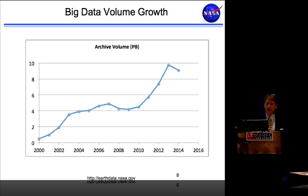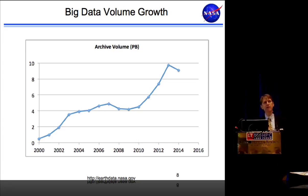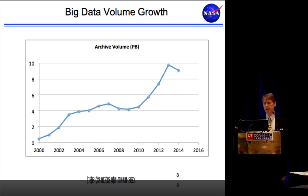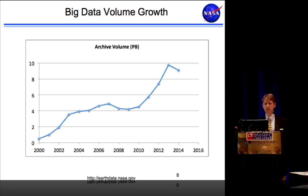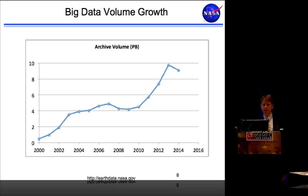This chart comes from our metrics system, with data back to 2000. You can see the rise over time — occasionally there's a dip when we deprecate a major set of data collections as we reprocess them, but overall it's a fairly significant trend. Since the year 2001, we've basically had a tenfold increase in archive volume, and a new set of satellites going up in the next few years will increase that volume further.